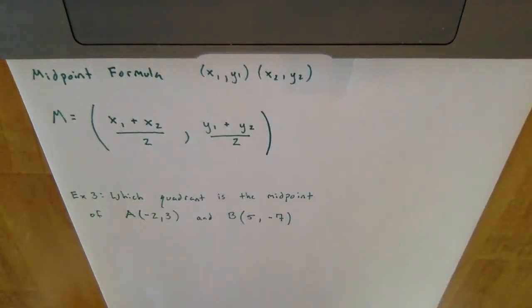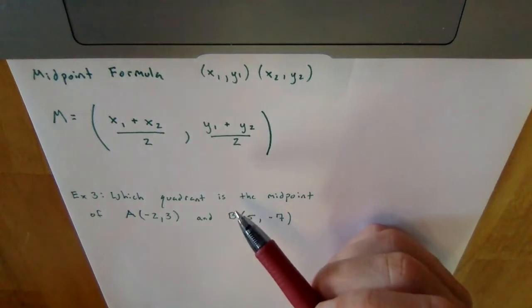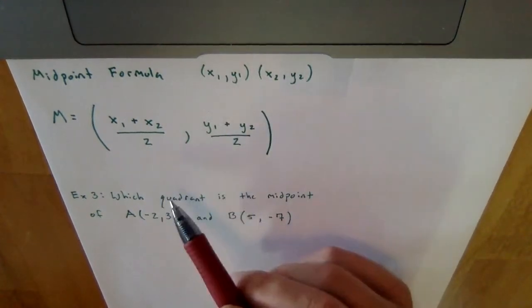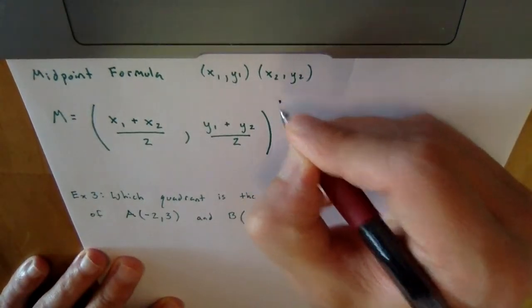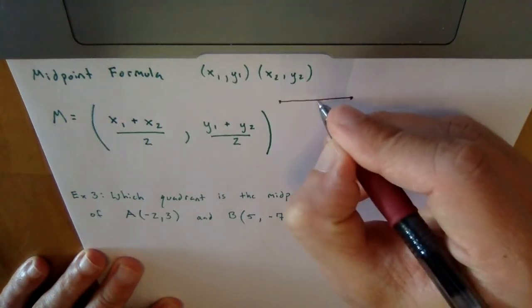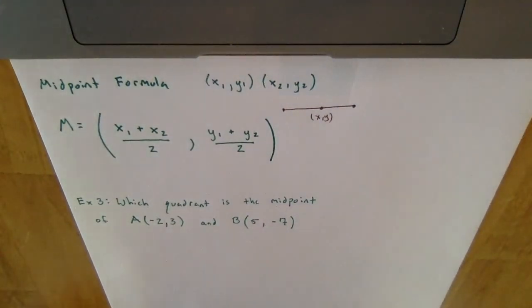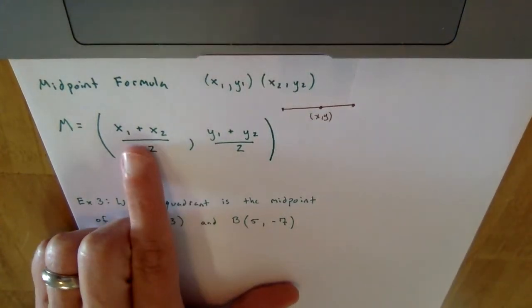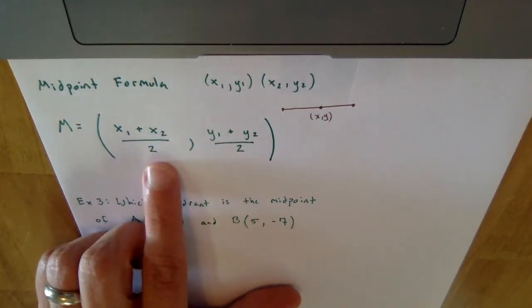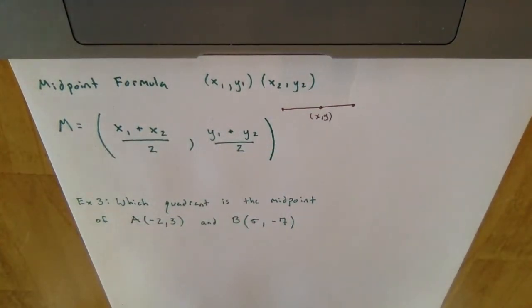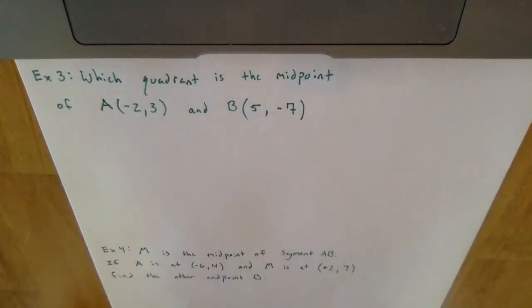Now we'll look at the midpoint formula. If you haven't printed the note sheets, pause and write this down. The midpoint is the point in the middle of a segment — it has an x and a y coordinate. The formula is: x1 plus x2 divided by 2, comma, y1 plus y2 divided by 2. It's like finding the average of the x-values and the average of the y-values.